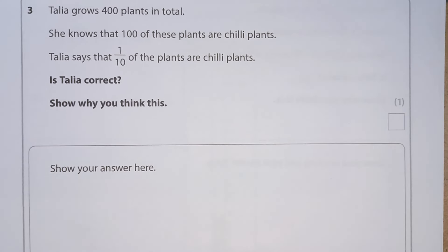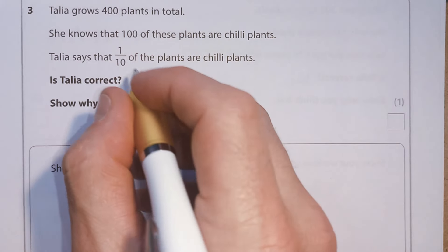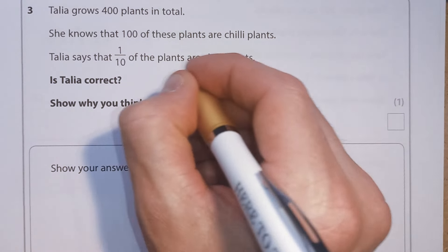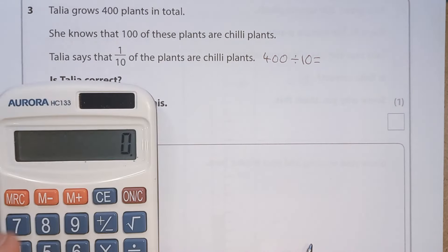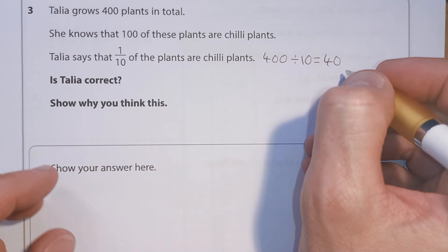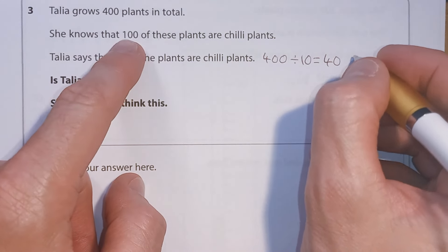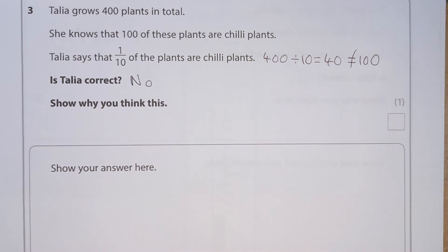Question three. Tanya grows 400 plants in total, and 100 of these are chili plants. Tanya says one-tenth of the plants are chili plants. Is she correct? One-tenth of 400 is the same as 400 divided by 10, which equals 40. She says it's a tenth, but that's 40 — not 100. So Tanya is not correct.